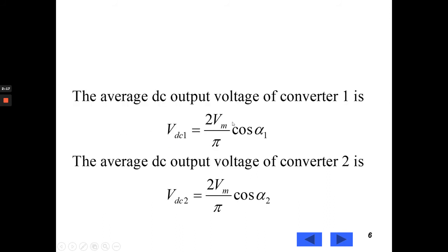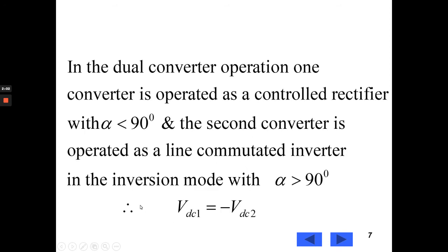The average DC output voltage of converter 1 is VDC1 equal to 2Vm by pi cos alpha 1, and the average DC output voltage of converter 2 is VDC2 equal to 2Vm by pi cos alpha 2.